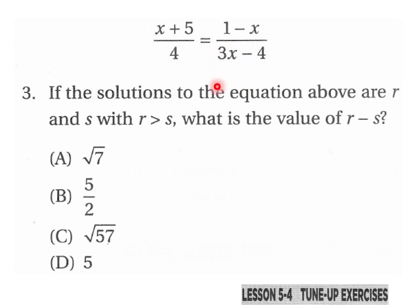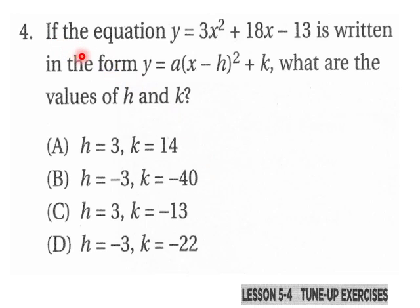Number four: If the equation y equals 3x squared plus 18x minus 13 is written in the form of like this, with you're factoring out a number from the rest of this expression plus a k, what are the values of h and k? Which is actually the vertex form of a quadratic, so you have to factor this down to find that.